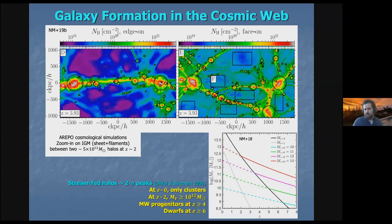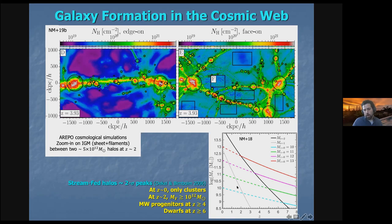A good rule of thumb — going back to Dekel, Birnboim, and Mo 2006 — is that stream-fed galaxies correspond to a two-sigma peak in the cosmic density field, demarcated by the black line. The colored lines are average mass tracks for halos of different masses at redshift zero. At redshift zero, you only expect very massive groups or clusters to be stream-fed. At redshift two, you expect any halo above ten to the twelve solar masses to be stream-fed. A Milky Way progenitor may have been stream-fed at redshift four or greater, and even low-mass dwarf galaxies at redshift six or above were likely also stream-fed. This is a phase that almost every galaxy went through at some point during their evolution.